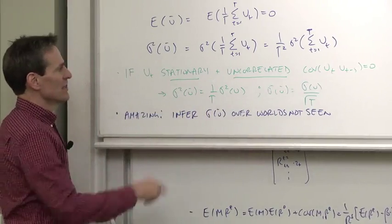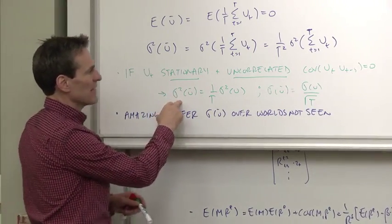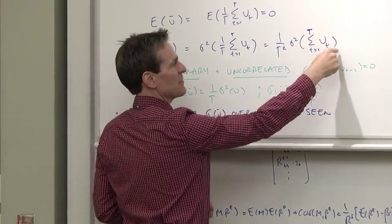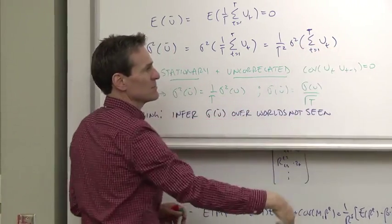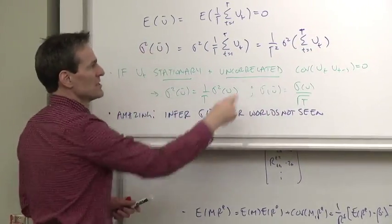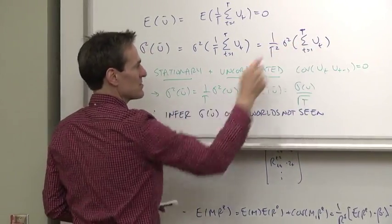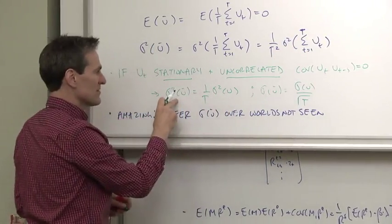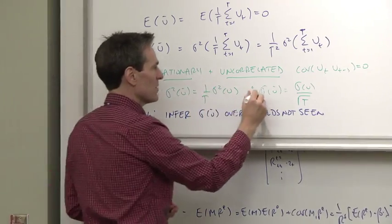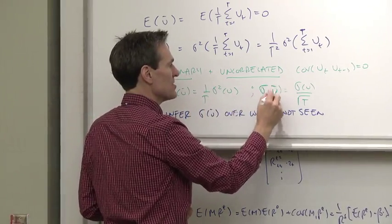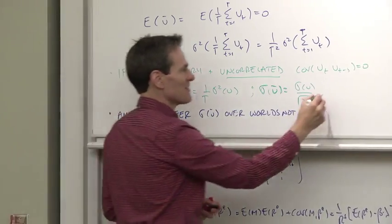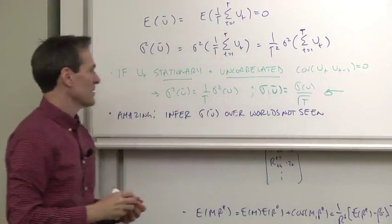If that's true, then the variance of the sample mean, how do we do it? Well, variance of a sum of random variables is the sum of the variances plus the covariance terms. The covariance terms are all zero. There's t of those terms. So that 1 over t squared cancels with 1 t there. And we get the variance of the sample mean is 1 over t times the variance of the random variable. Or the standard deviation of the sample mean is sigma over root t. The famous formula sigma over root t, that's where it comes from.